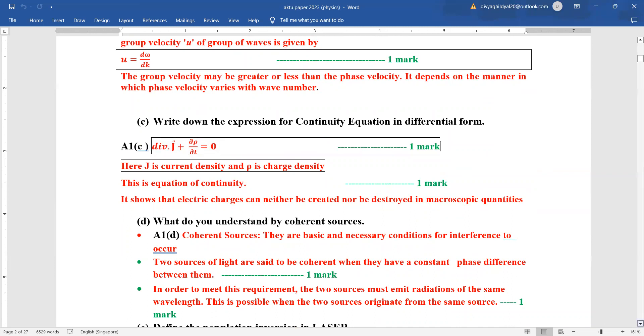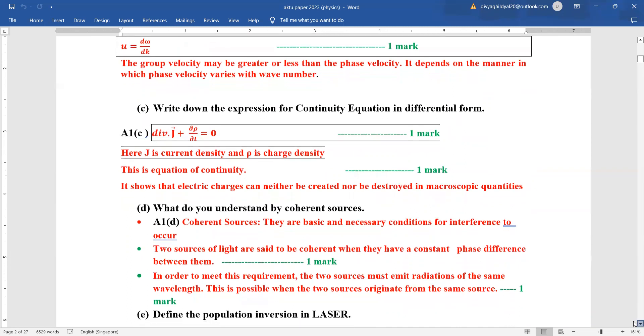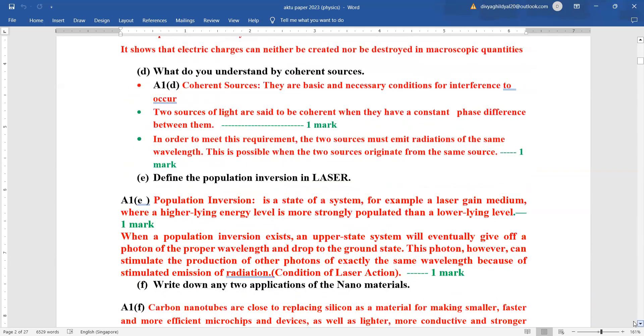What do you understand by coherent sources? A very simple question. Coherent sources are the basic conditions for us to observe interference fringe pattern. Two sources having constant phase difference and originating from the same source are known as coherent sources. Two marks for that.